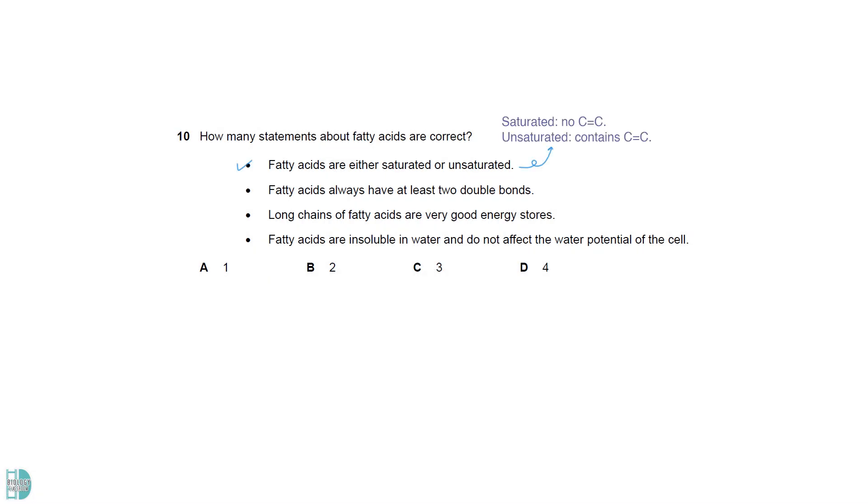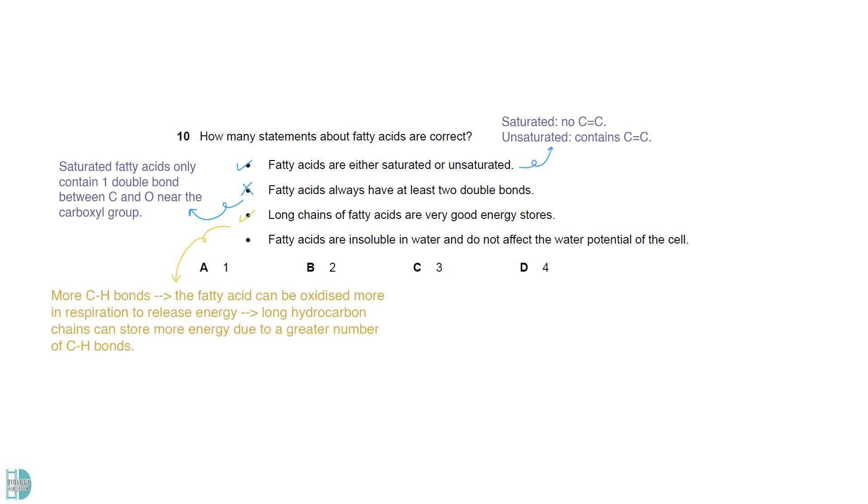Fatty acids can be saturated or unsaturated, depending on whether they have a carbon-carbon double bond in the hydrocarbon chain. Saturated fatty acids only contain one double bond between C and O near the carboxyl group. The more C-H bonds there are, the more the fatty acids can be oxidized in respiration to release energy. So it is true that long hydrocarbon chains can store more energy due to a greater number of C-H bonds. Fatty acids are hydrophobic and insoluble. An insoluble molecule cannot alter the water potential as it does not interact with water.